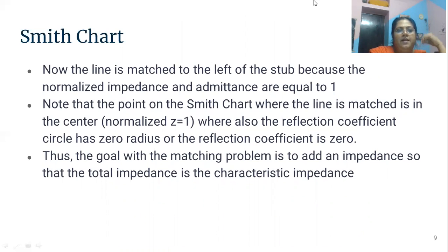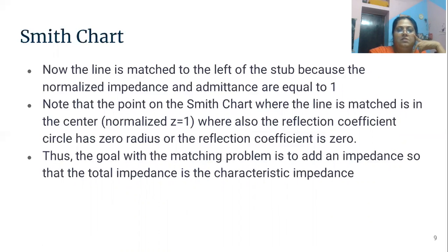The line is matched at the point where the normalized impedance and admittance are equal to 1. The point on the Smith chart where the line is matched is at the center — that is, the normalized value of z is 1 — where also the reflection coefficient circle has zero radius, or the reflection coefficient is 0. Thus, the goal with the matching problem is to add impedance so that the total impedance equals the characteristic impedance. The characteristic impedance of the transmission line is given by the square root of (R + jωL) / (G + jωC). Using the Smith chart, we can find the total impedance of the transmission line.